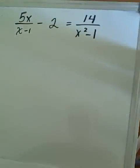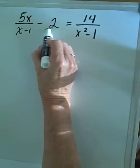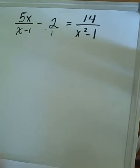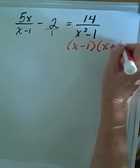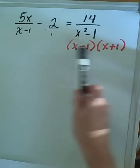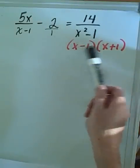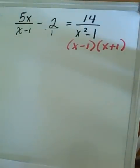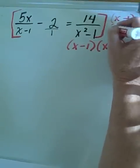Now we're going to deal with a more complicated rational polynomial equation. Like the previous one, we need a common denominator, but first we factor where we can. The last denominator factors into x minus 1 times x plus 1. So our common denominator, since x minus 1 is already present and x squared minus 1 equals x minus 1 times x plus 1, will be x minus 1 times x plus 1. We multiply every term by this common denominator.